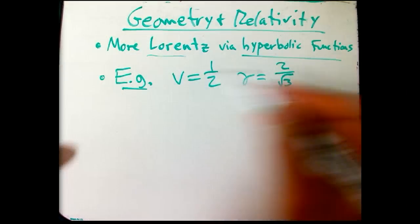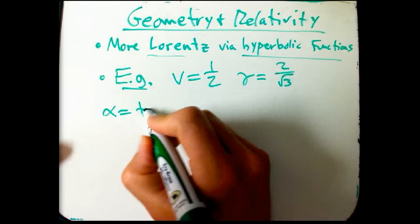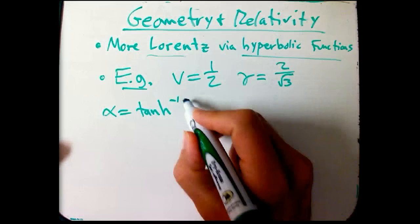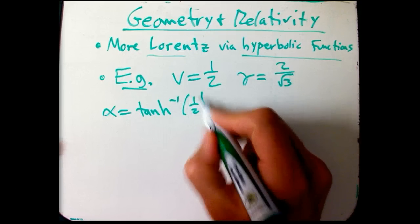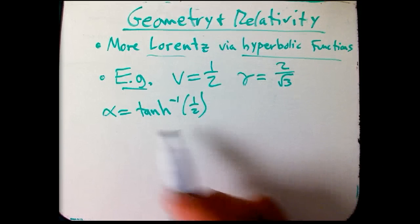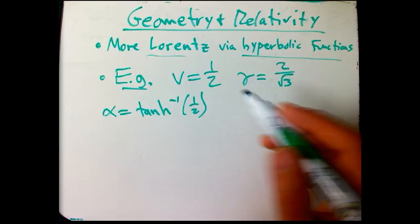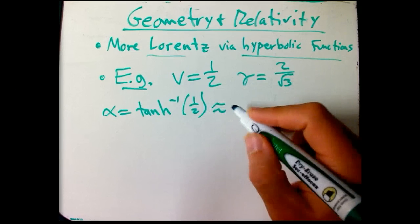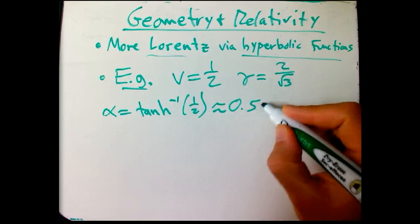And then we had a couple of formulas for alpha. One is it's the inverse hyperbolic tangent of V. So if your calculator directly does inverse hyperbolic tangents, then that's fine, and it turns out to be about 0.549.